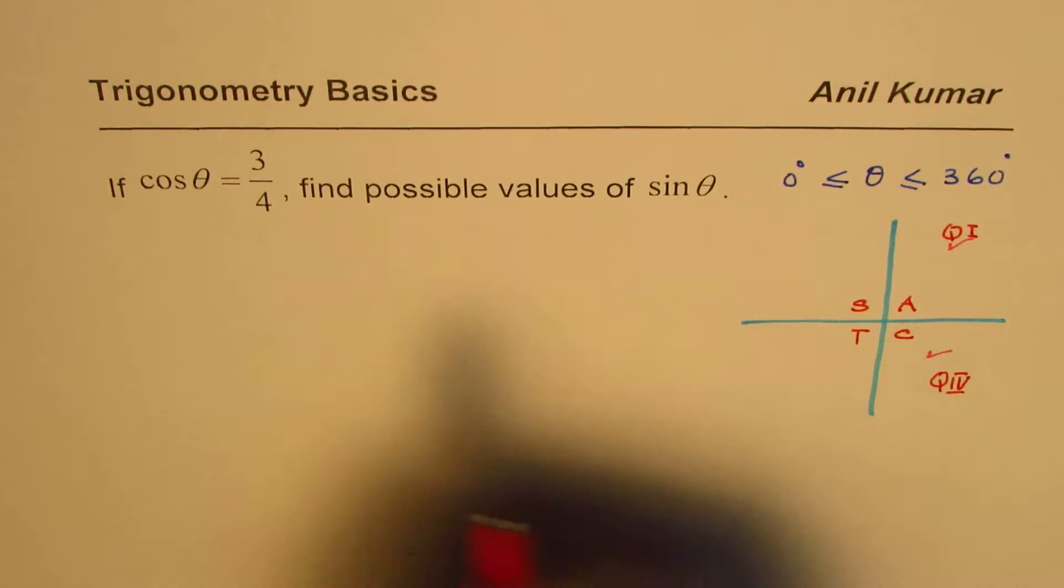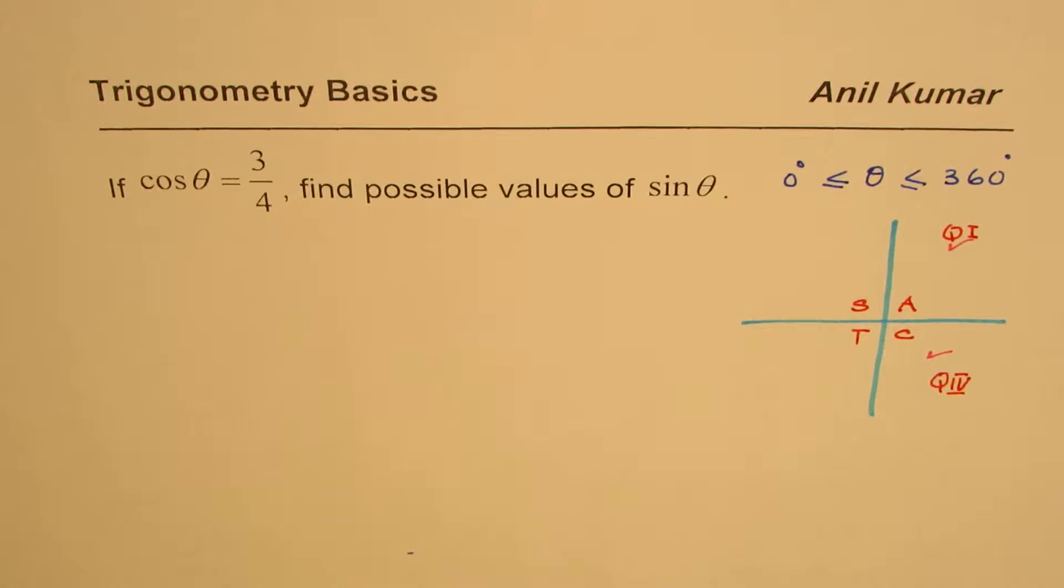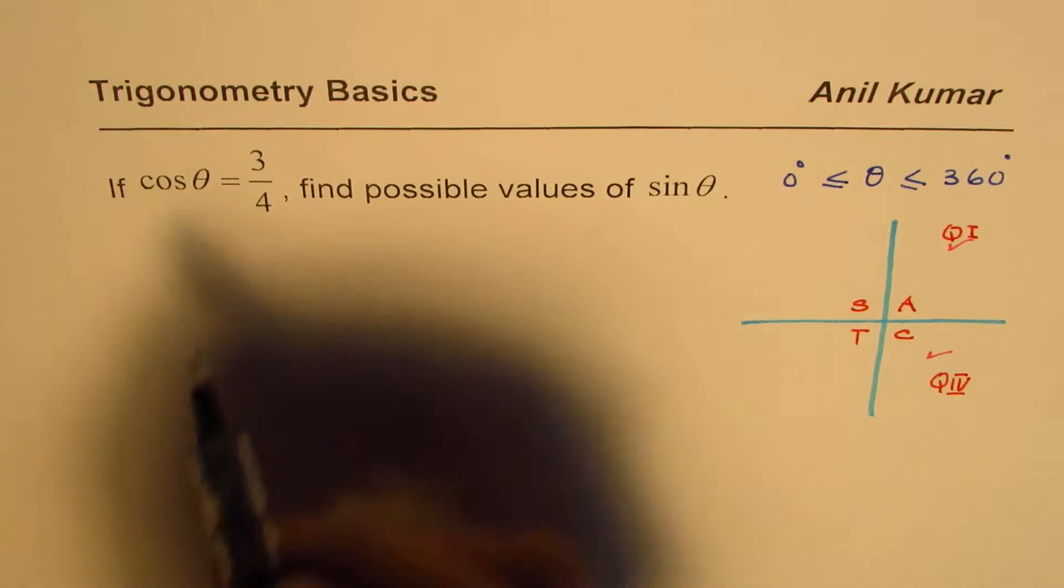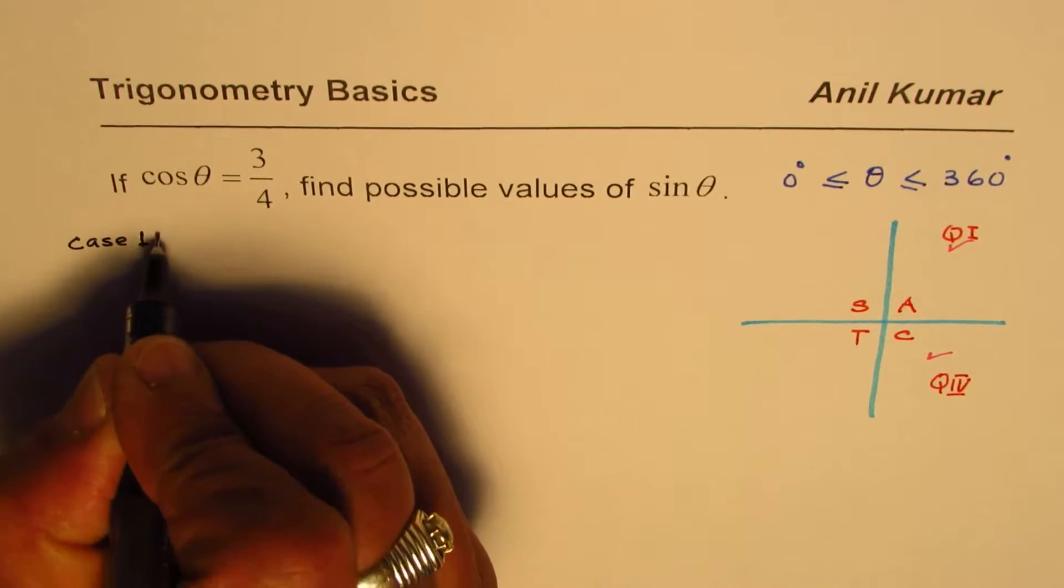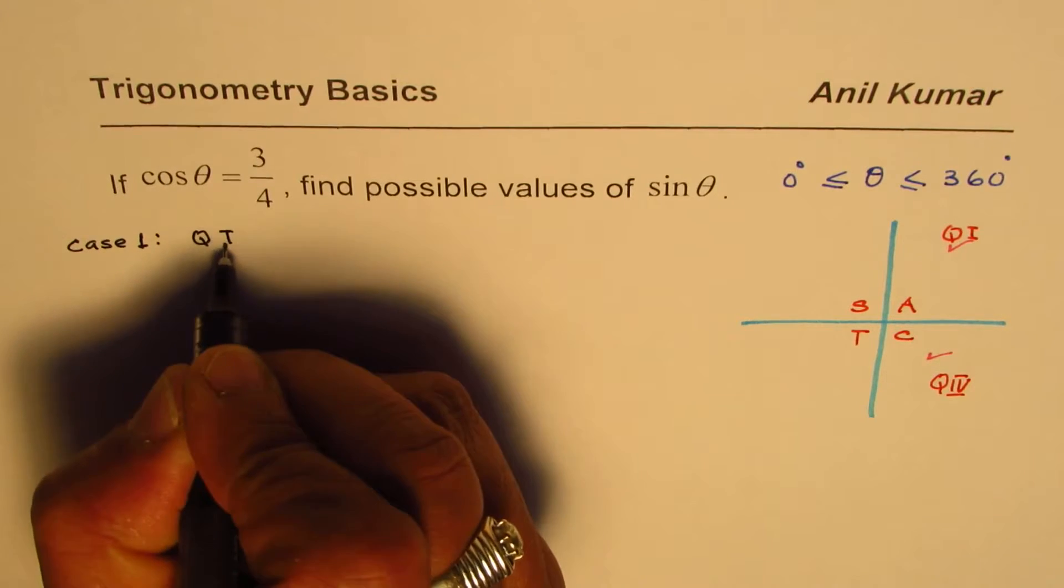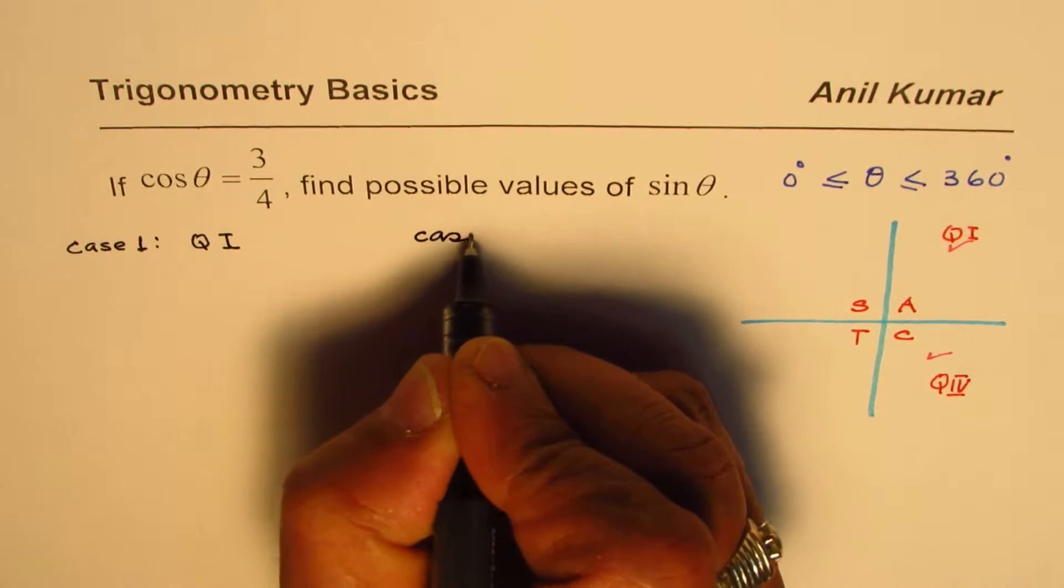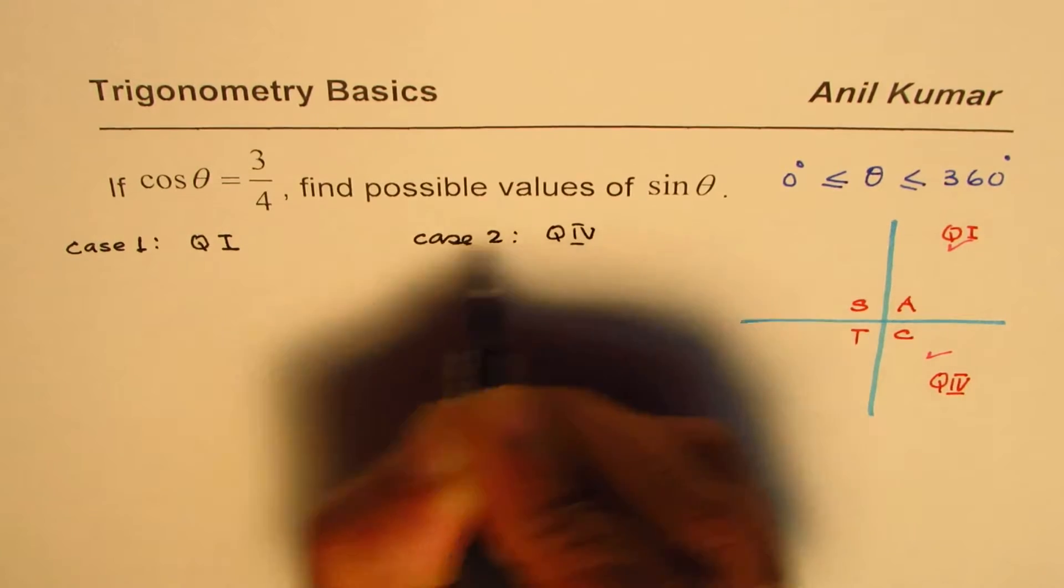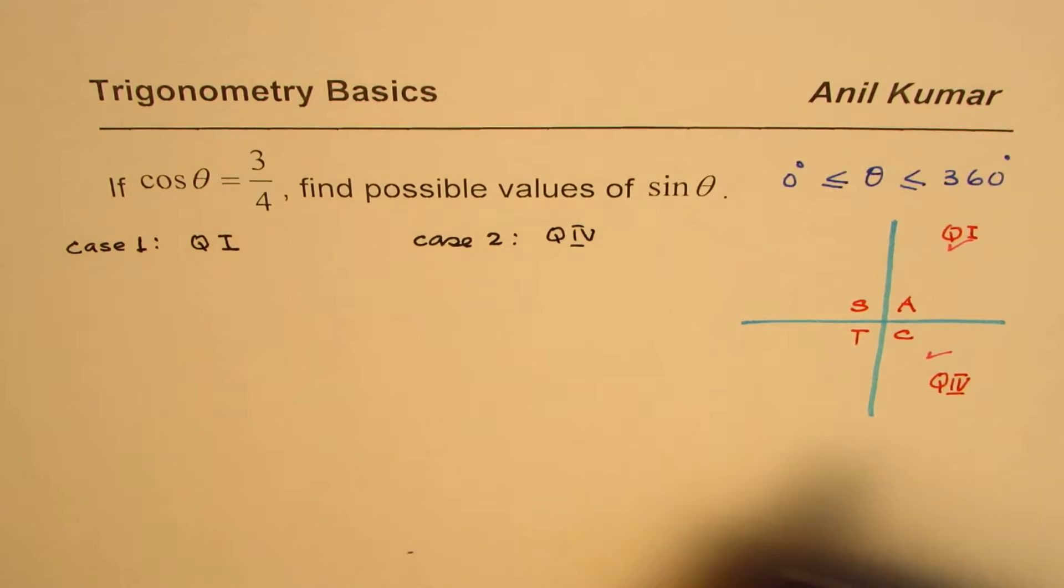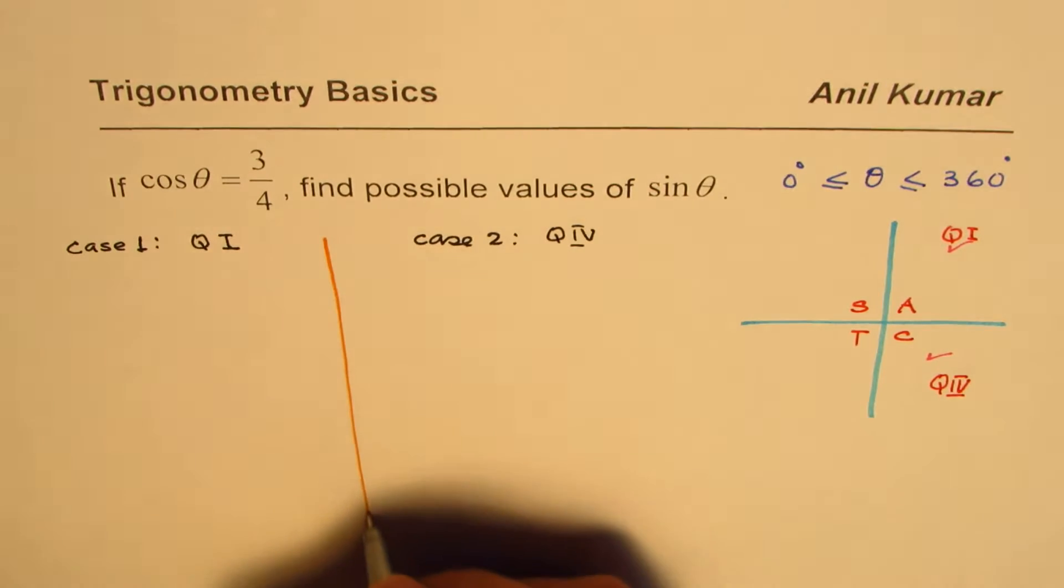So for cos theta of 3 over 4, we know clearly that we are looking for two cases. Case one is quadrant 1 and case 2 is quadrant 4 when cos theta is positive. So we will do two different cases to solve.